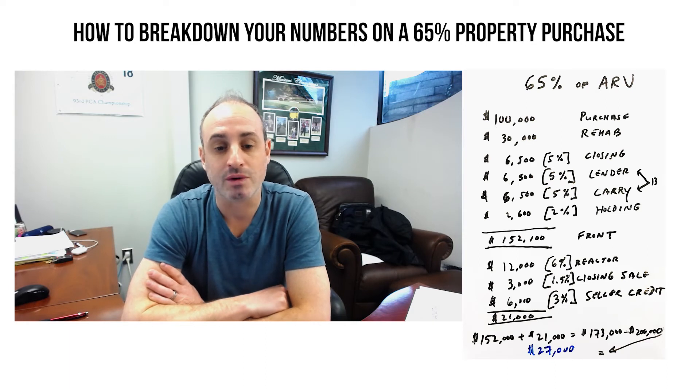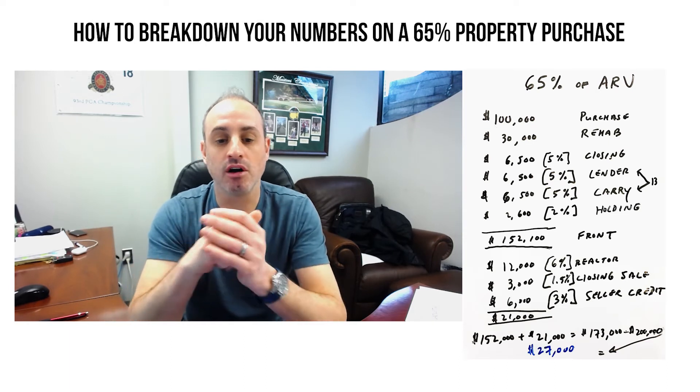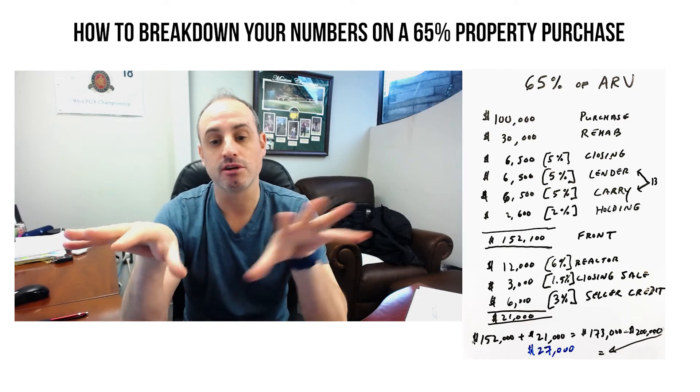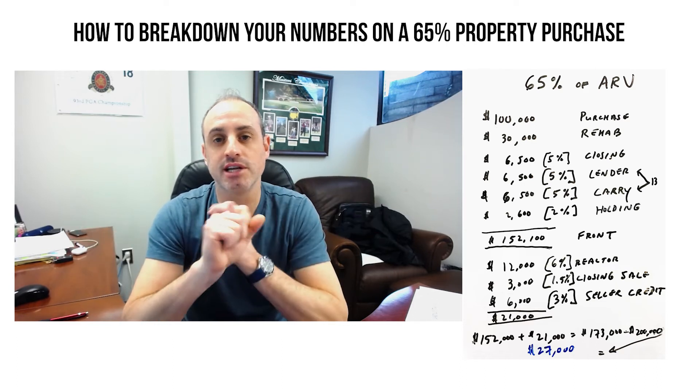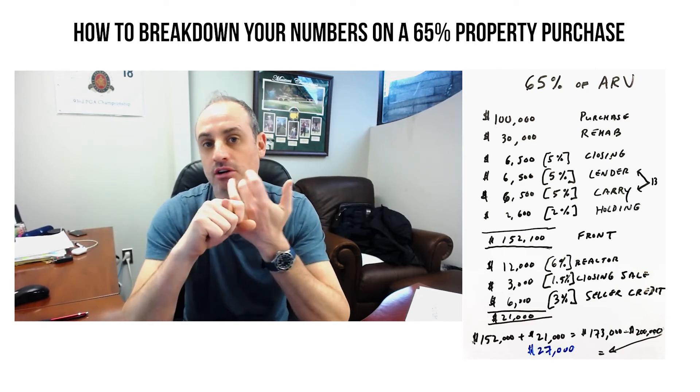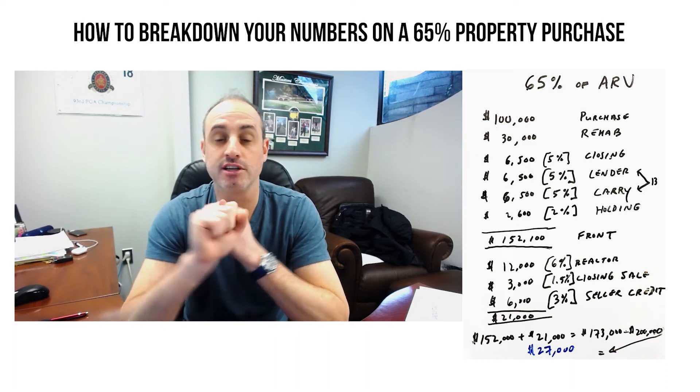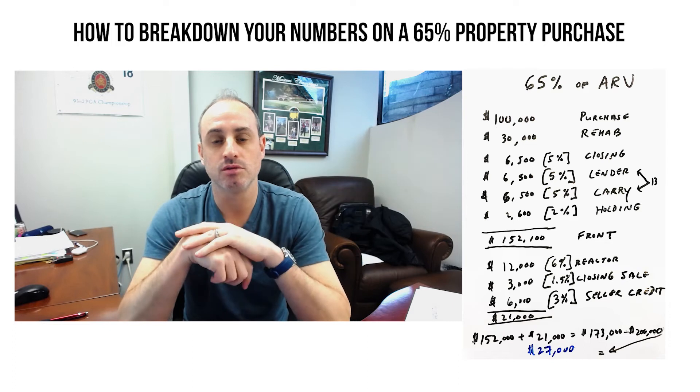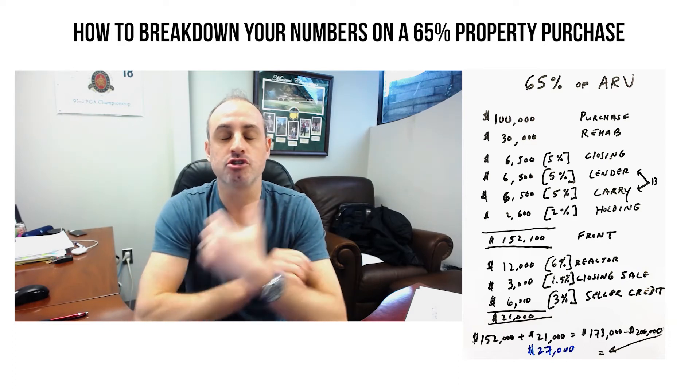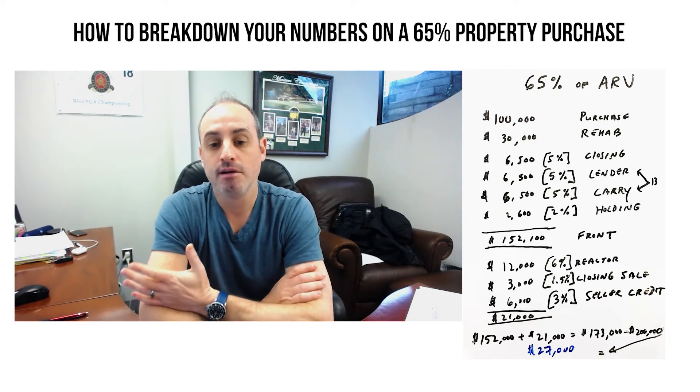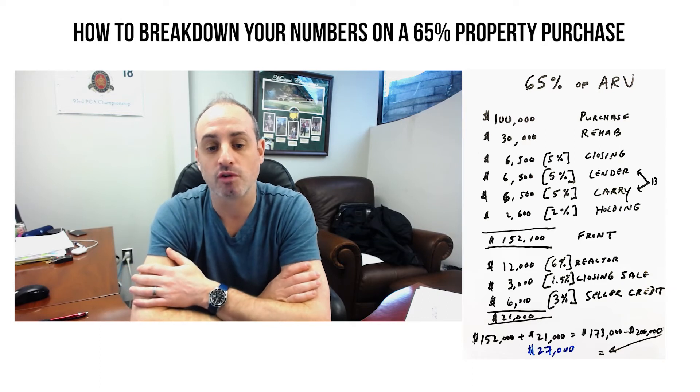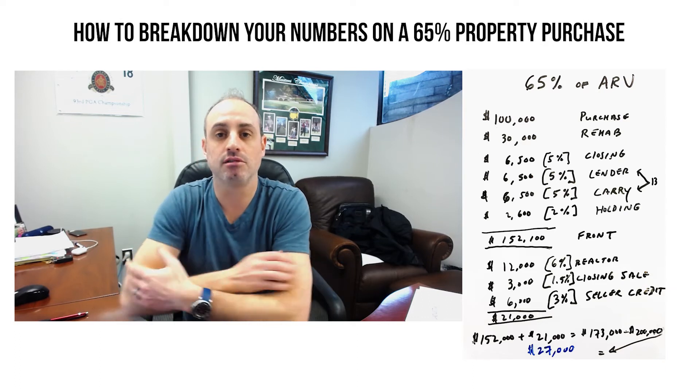So your front end costs come out to $152,100. So that's before the resale. So right now, $152,000 are your front end costs. Now let's talk about your back end costs. Typically you have a real estate agent that sells the property at 6%.